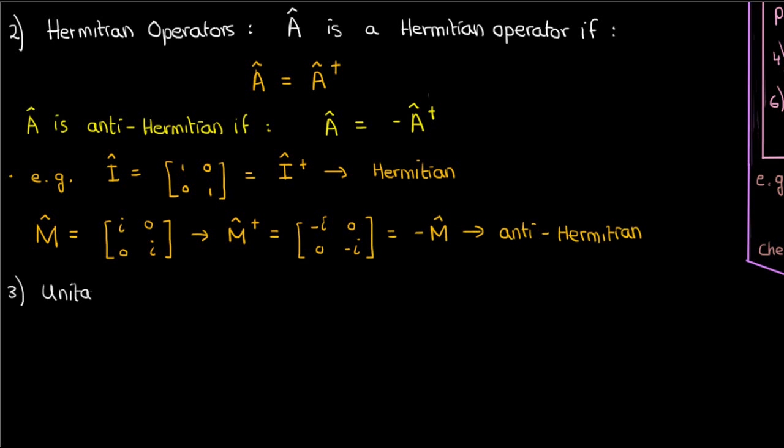The next type of operator we'll discuss is the unitary operator. A linear operator U hat is unitary if its Hermitian conjugate equals its inverse.